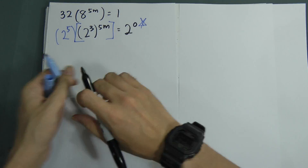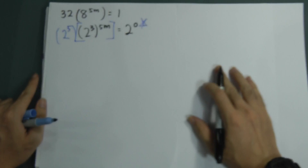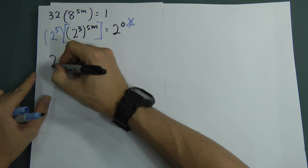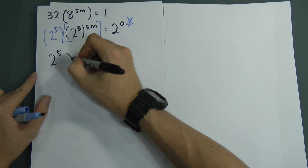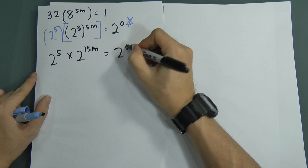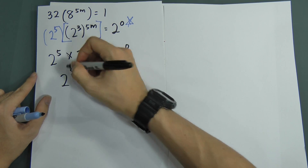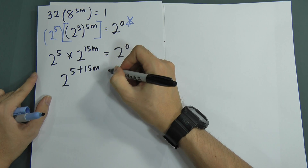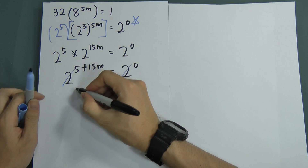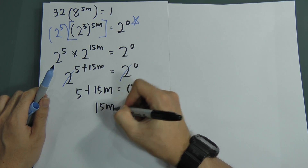I want everything in base 2, so I change 1 to 2 to the power of 0. This is a very, very important piece of information before you're able to solve this. So this is 2 to the power of 5, and then bracket — multiply — 2 to the power of 15m equals to 2 to the power of 0. Multiply means we can sum up the powers. So 5 plus 15m equals to 0. Therefore, 15m equals to negative 5.